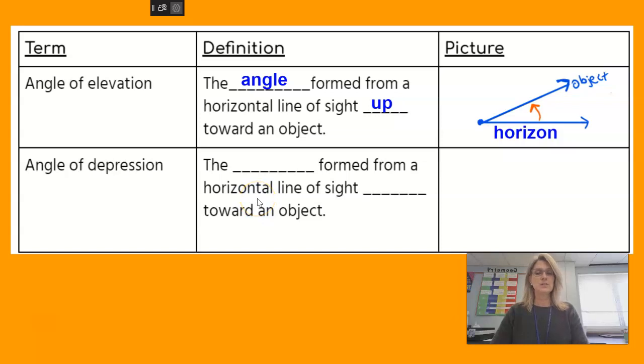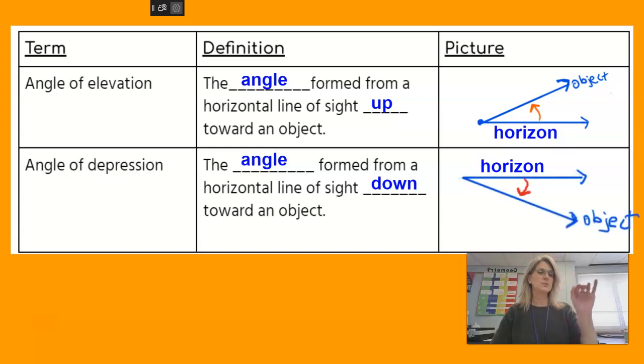Likewise, an angle of depression is the angle formed from a horizontal line of sight down to an object. So here we're going to draw that horizon, but let's look at our object below the horizon, draw an arrow down. That is our angle of depression.